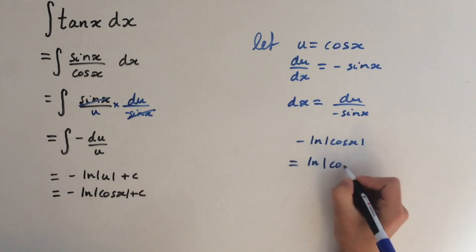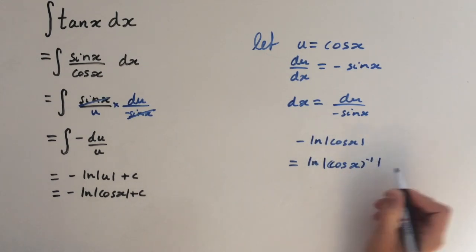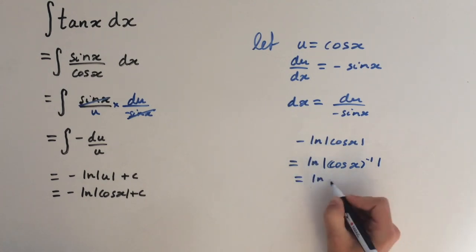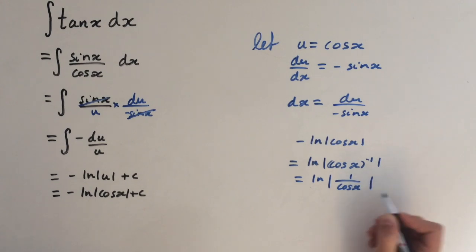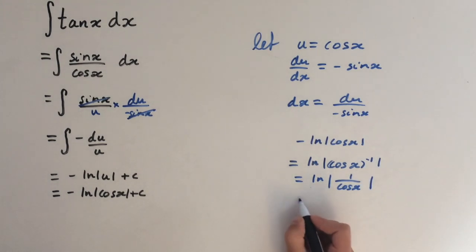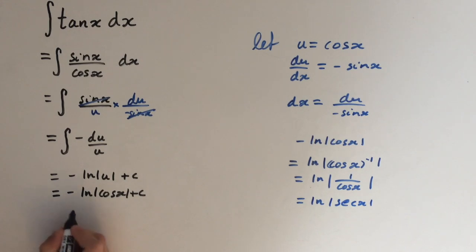So we get cosine of x, and this in here is the power of minus one, so we can express that as one over cosine of x, and one over cosine of x is just sec(x). So this equals ln of sec(x). So the integral for tan(x) is ln(sec(x)) plus c.